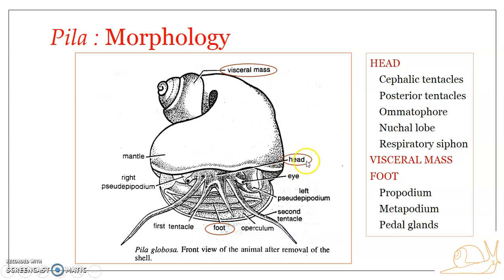Now looking in detail at the head region: the head is a fleshy part of the body that overhangs the foot region on the dorsal side. Anteriorly, the head is produced into a contractile snout — a protruding part — and this snout bears the mouth. Just about the mouth, the snout is produced into processes generally referred to as tentacles, which are contractile and dorsolateral in position on the head.